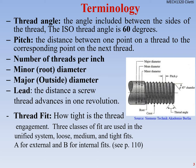When we rate these, we talk about the number of threads per inch. We break it down into minor diameter and major diameter. Think of minor as the smaller diameter — at the very bottom of the groove — and the major diameter as the outer diameter. The mean diameter is the average between those two.